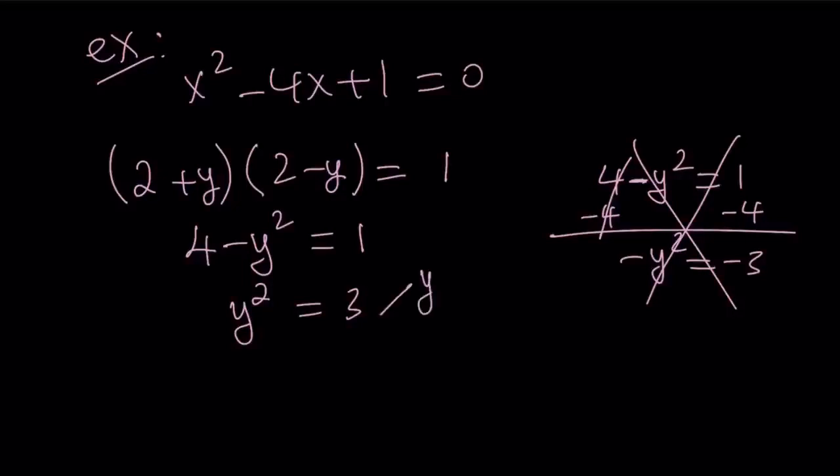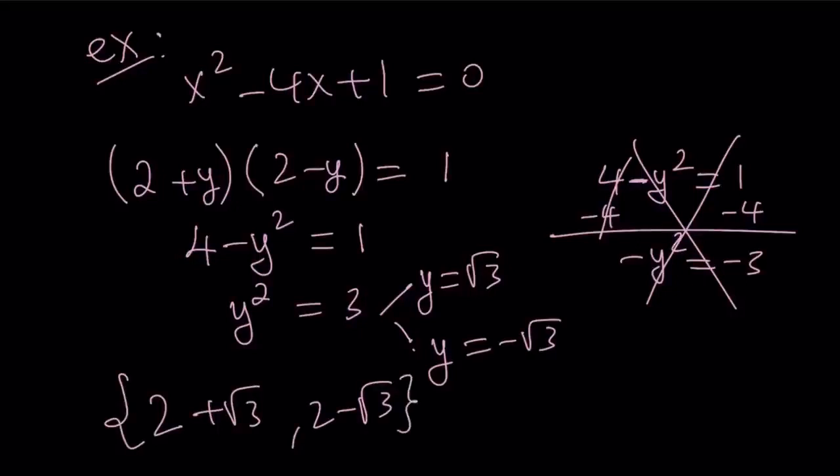I talk too much. I'll try to stop. So y equals root 3, or y equals negative root 3. What does that give you? 2 plus root 3, and 2 minus root 3. Case closed. Those are the solutions. Notice that they are irrational numbers, but we could solve them easily.